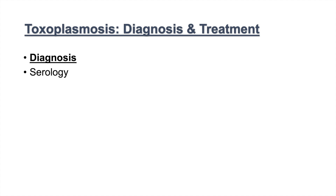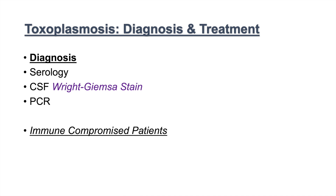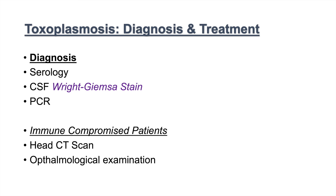For diagnosis, we use serology, looking for antibodies to Toxoplasma gondii. With CSF, we can do a Giemsa stain. We can also use PCR to look for genetic evidence of Toxoplasma gondii. In immunocompromised patients — who we worry about the most for symptomatic toxoplasmosis or reactivation — we can do a head CT scan and ophthalmological examinations.